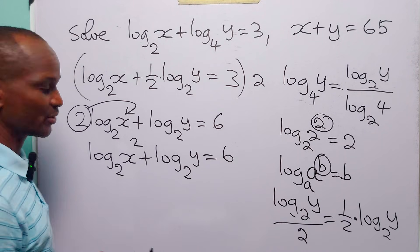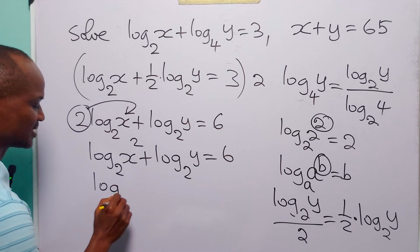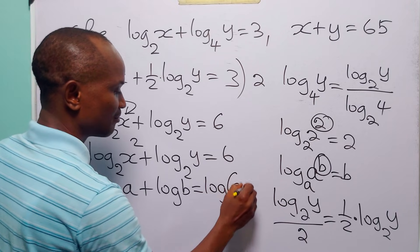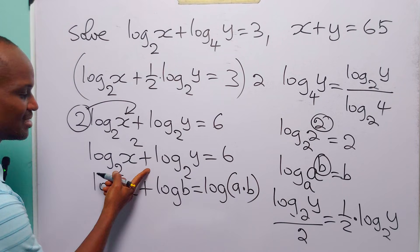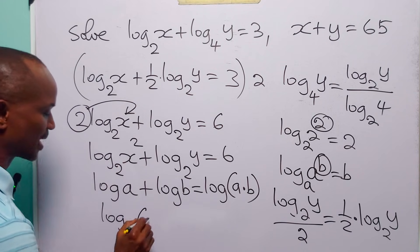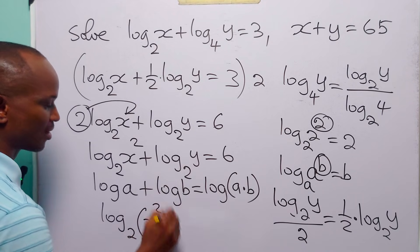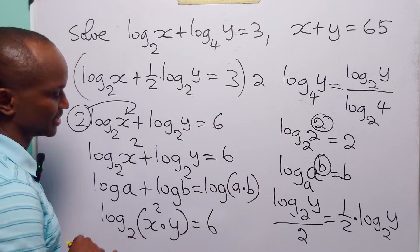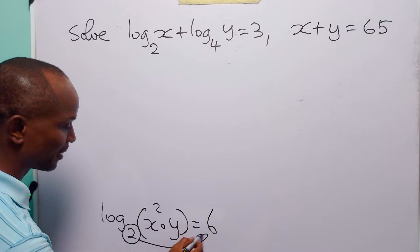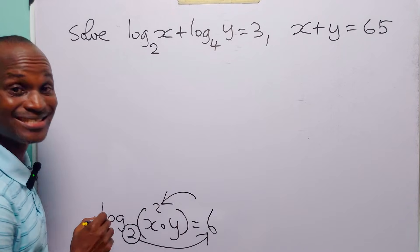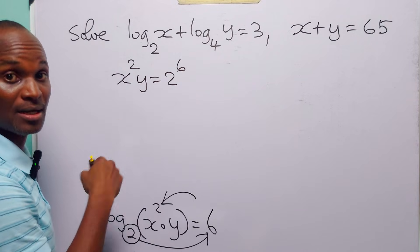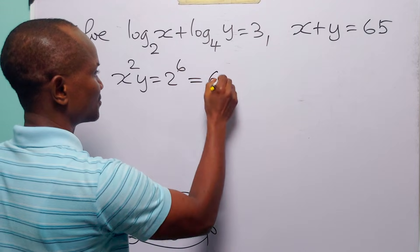Now remember the addition rule for logarithms: log A plus log B is equal to log of A multiplied by B. That means we can write the left hand side as log to base 2 of x squared multiplied by y is equal to 6. This statement simply means that 2 to the power 6 is equal to x squared times y, so x squared y is equal to 2 to the power 6, which is 64.